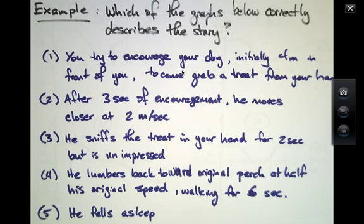So in this very simple example, I'll show you a bunch of graphs and I want to see which one of them most accurately represents the story that's described here. So the story consists of the following: You have a dog that's initially located four meters in front of you, which you're trying to encourage to come grab a treat from your hand.